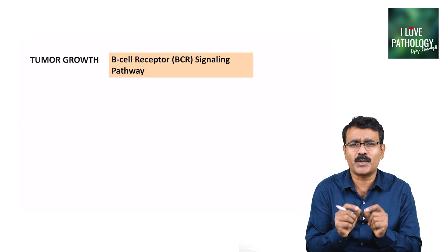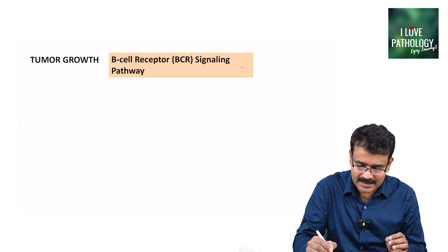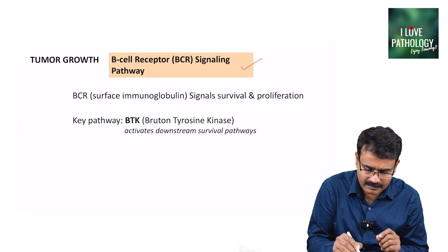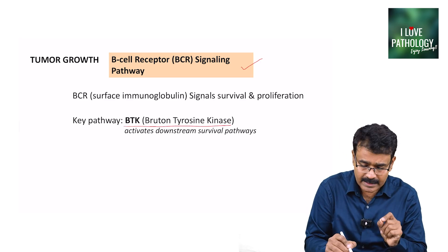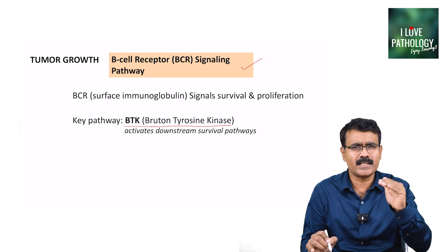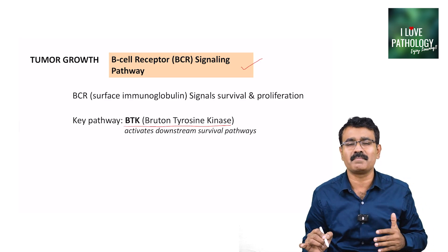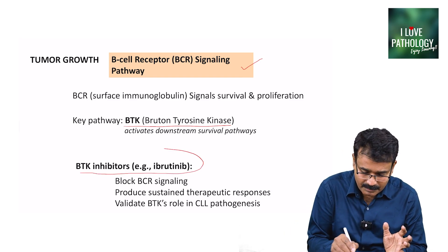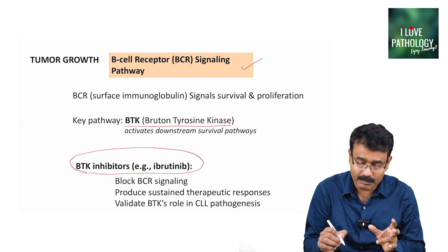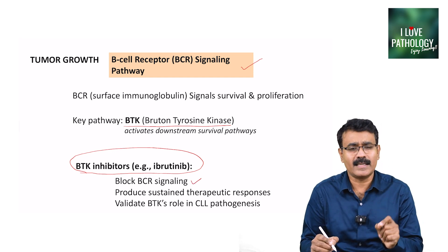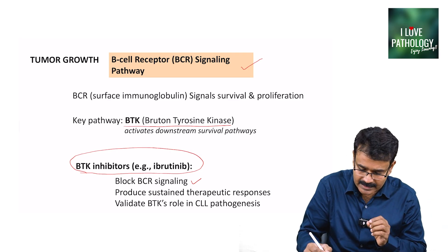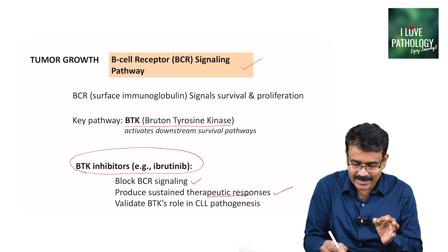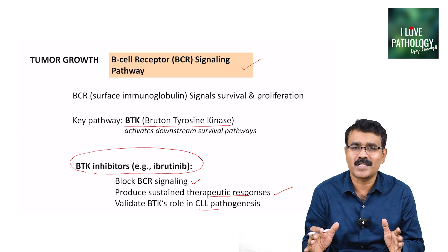Another important way the tumor grows is through B-cell receptor signaling — specifically the BTK, or Bruton tyrosine kinase, pathway, which activates downstream signaling causing cell proliferation. BTK inhibitors like ibrutinib block BCR signaling and produce sustained therapeutic responses, validating the role of BTK in the pathogenesis of chronic lymphocytic leukemia.